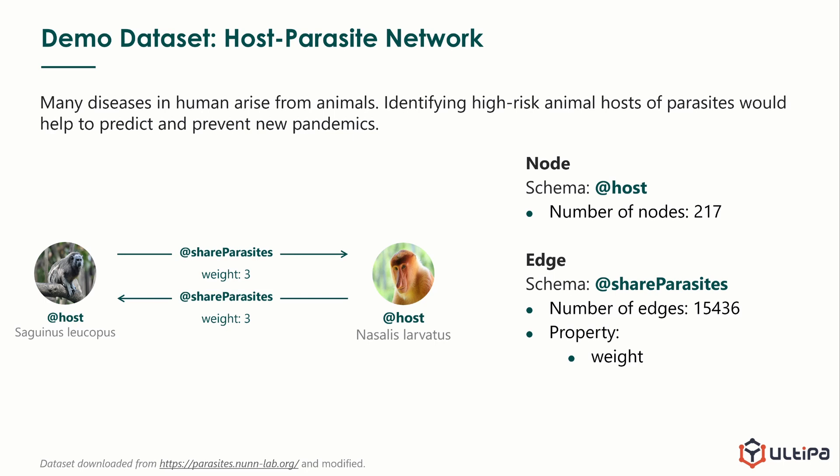And 15,436 share parasites edges. Next, we will rank the host by the eigenvector centrality. A host with high centrality is considered as a strong spreader of parasites.